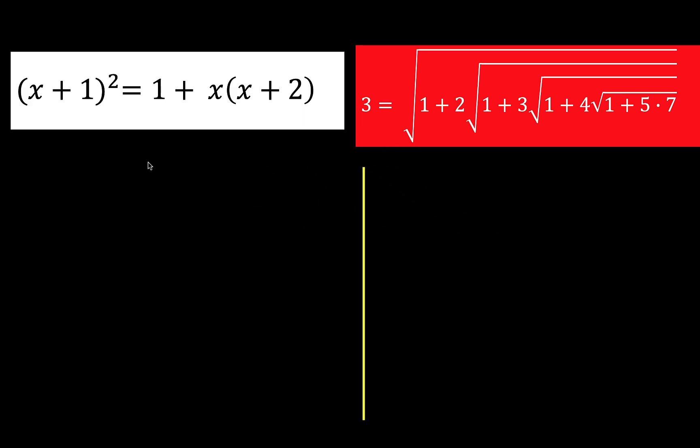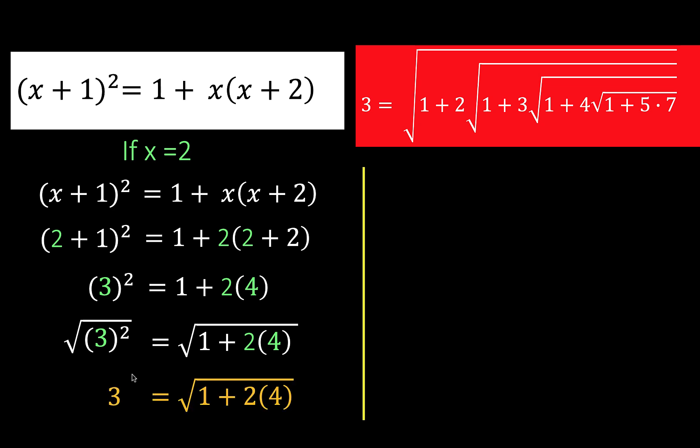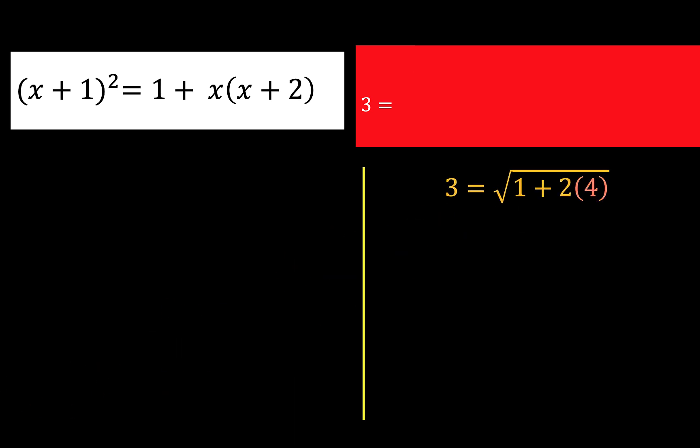Now let's assign values for x. Let's say x equals 2. When x equals 2, substitute x equals 2 to this square binomial. We now have this, replacing all x's by these green 2's. And simplifying, the left becomes 3 squared, and the right side becomes 1 plus 2 times 4. Then take the square root of both sides, and simplify. We now have this radical expression for 3. The square root of 1 plus 2 times 4. Notice now that we already have this 1 and 2, similar to the original one.